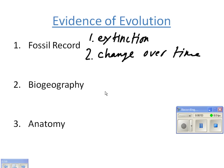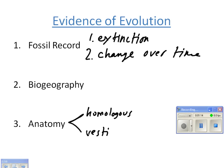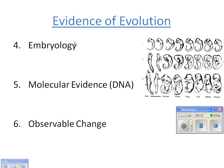Biogeography deals with the distribution of organisms across the earth and how they're similar in similar environments. Comparative anatomy focuses on two main things: homologous structures and vestigial structures, which we'll get to in a few slides.